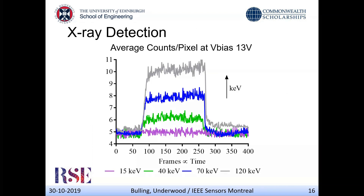We did an additional test to see if we could observe X-ray detection in real time. We turned on the detector, waited approximately 175 frames, then turned on the X-ray source, and you can clearly see the distinction between X-ray detection frames. However, we cannot see anything at 15 kV at an operating bias voltage of 1.3 volts.